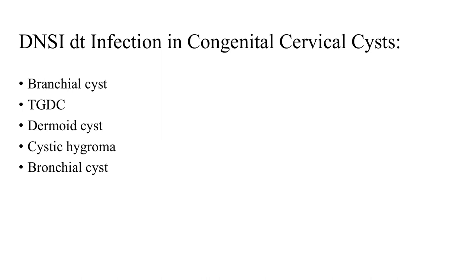Deep neck space infections arising from infection in congenital cervical cysts often have a history of previous intermittent swellings in the same area. A branchial cleft cyst is an embryologically trapped piece of ectoderm in the cervical sinus, with a slight predilection for the left side, typically anterior to the upper third of the sternocleidomastoid in young adults, often following an upper respiratory tract infection. A thyroglossal duct cyst is midline or paramedian and classically elevates with tongue protrusion — a deep neck space infection with a midline bulge should prompt looking for this.